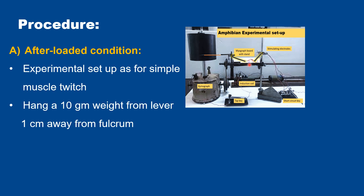Now let's see how we achieve these conditions. In amphibian physiology, this is the setup for recording a simple muscle twitch. You place the nerve-muscle preparation on the myograph board, attach the stimulating electrode on the nerve, tie the tendon with the isotonic muscle lever which has a writing point, and attach the secondary coil and primary coil — this is the primary and secondary circuit setup.